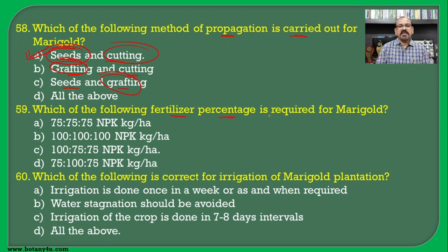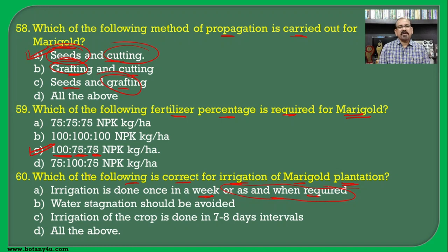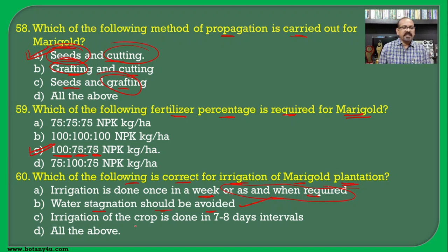Which NPK percentage is required for marigold? The NPK ratio is 100:75:75, so C is the correct answer. For irrigation of marigold: irrigation is needed once a week or as and when required, water stagnation should be avoided, and irrigation is done at 7 to 8 days interval. All these statements are correct with respect to irrigation in marigold cultivation.